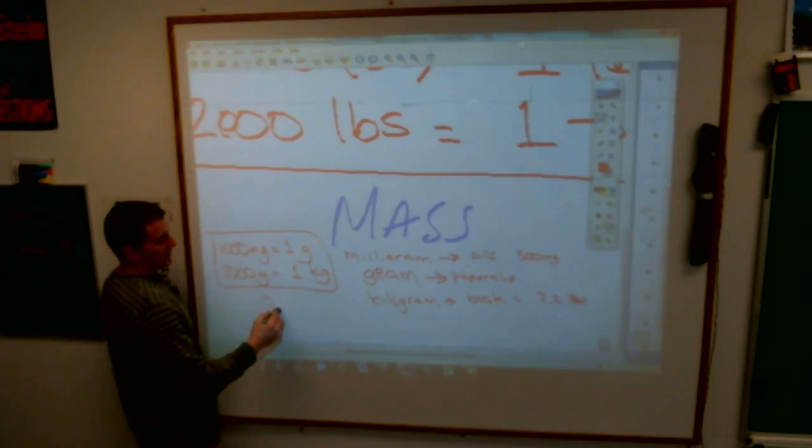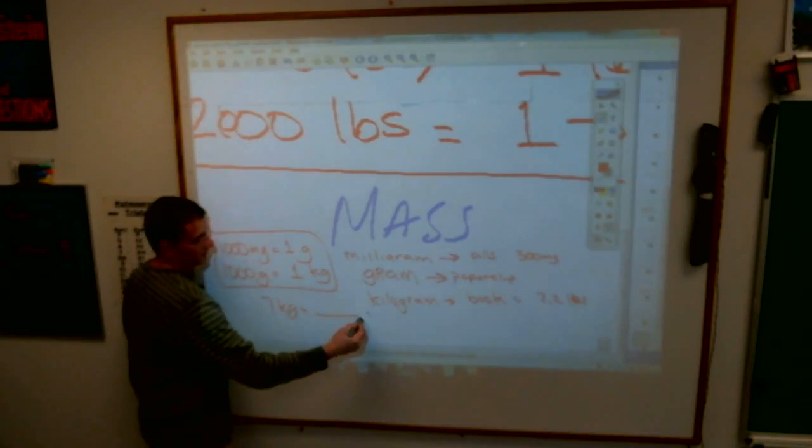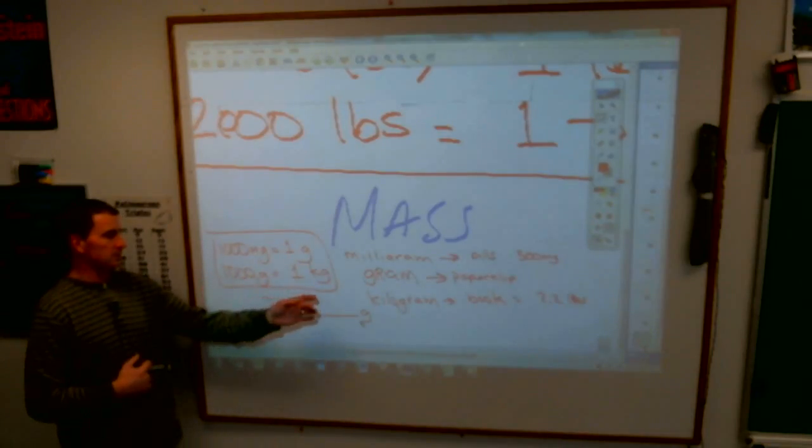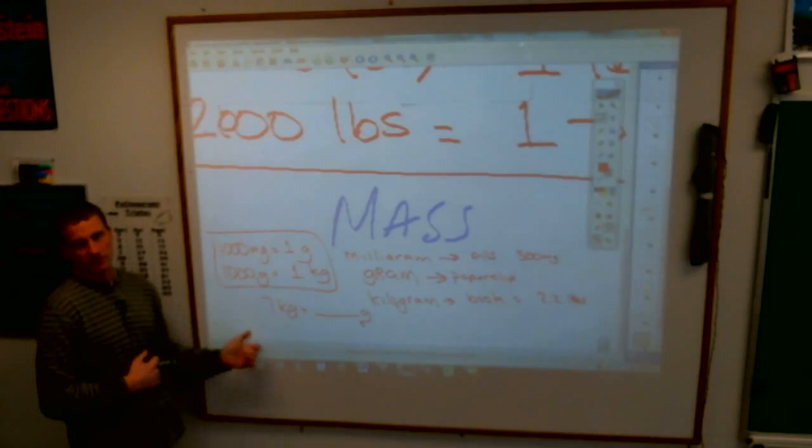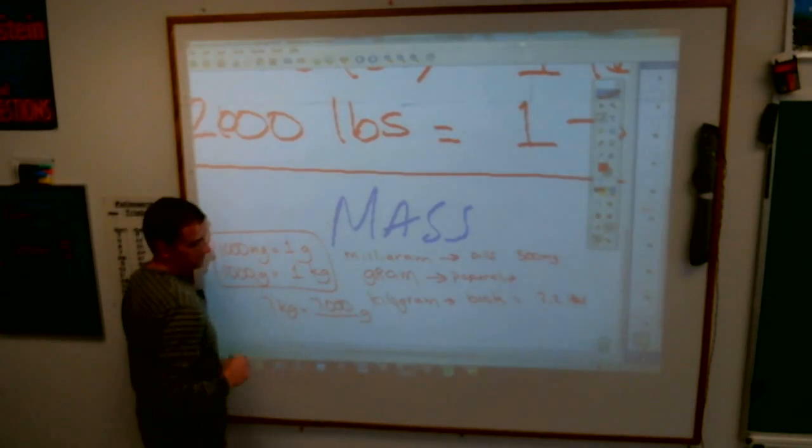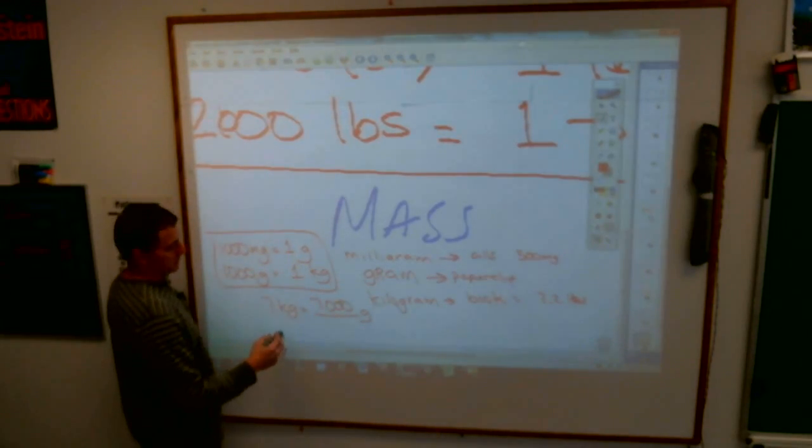For example, if I said seven kilograms would be how many grams? Seven kilograms. If there's a thousand grams to make up one kilogram, seven of them, Lauren, would be seven thousand of them. What if I asked you this? Seven kilograms equals how many milligrams?